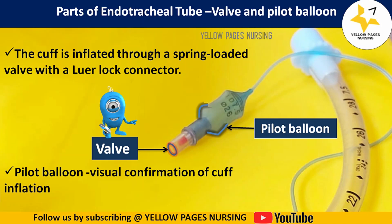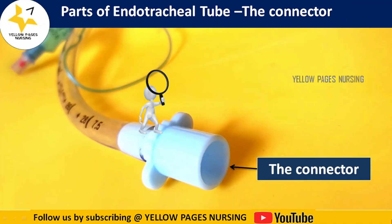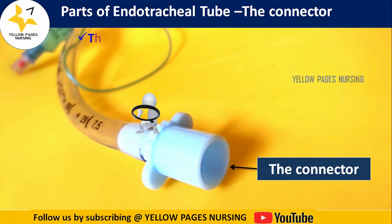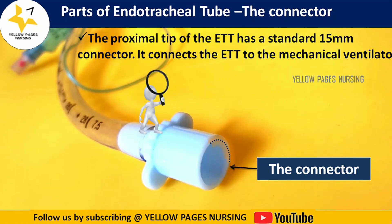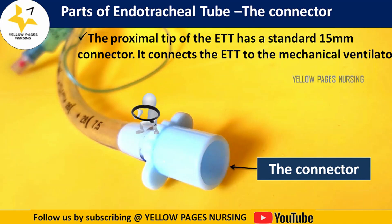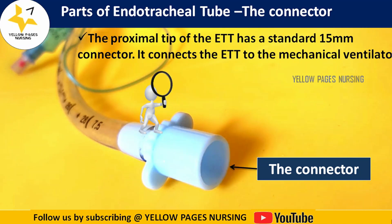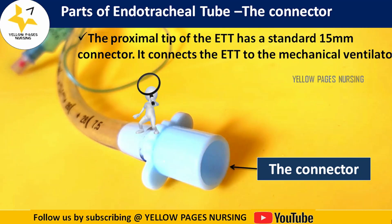Next is the connector — the proximal tip of the endotracheal tube has a standard 15 millimeter connector. This connector attaches the endotracheal tube to the mechanical ventilator through a breathing circuit. Sometimes between the breathing circuit and endotracheal tube, a catheter mount will be placed.